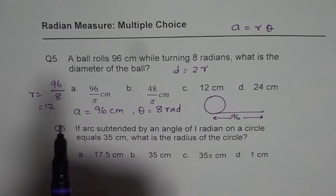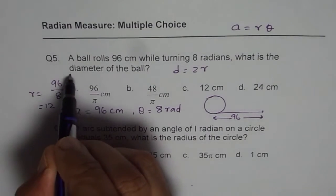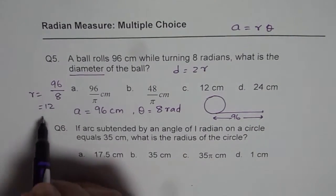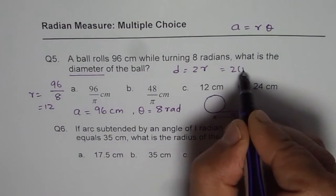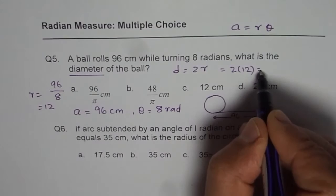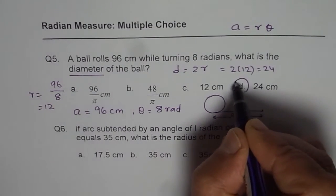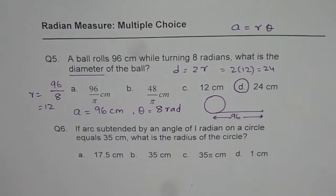Since we need to find the diameter, our answer should be 2 times 12, which is 24. So the choice is D: 24 cm.